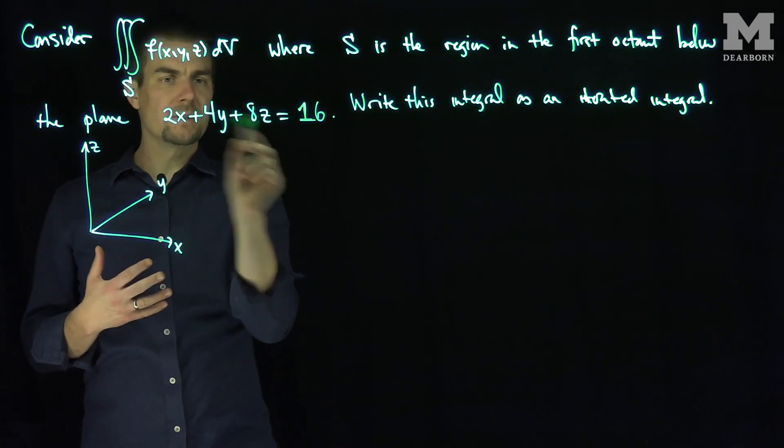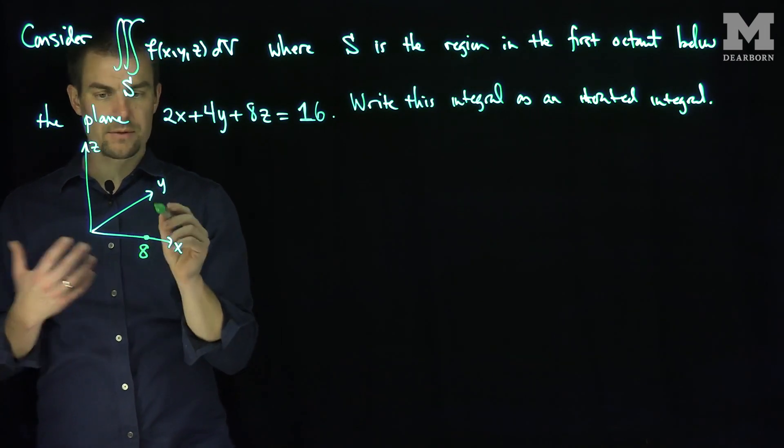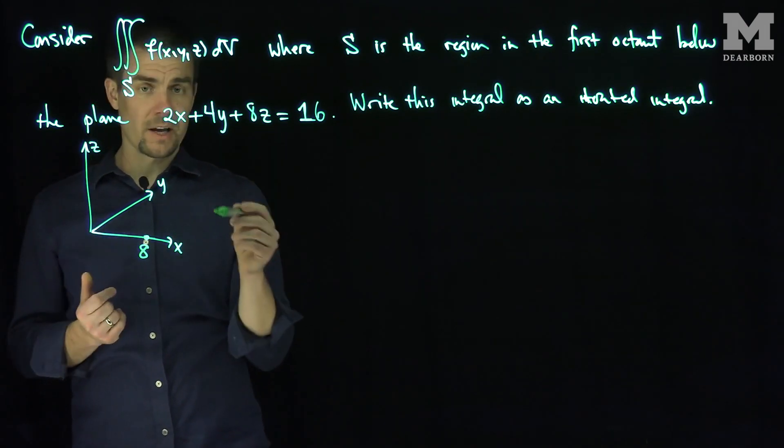Well clearly if y and z are equal to 0, then x is equal to 8. So here's the point x equals 8. So that's the point 8, 0, 0 is on this plane.